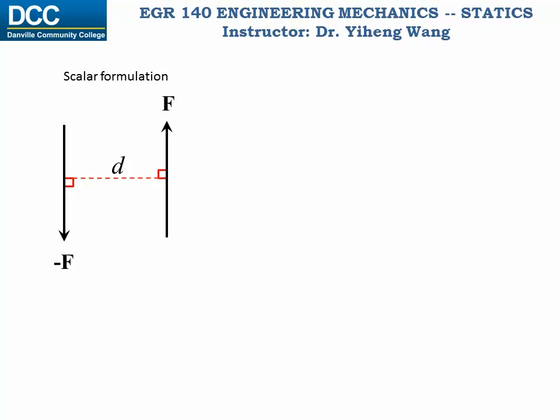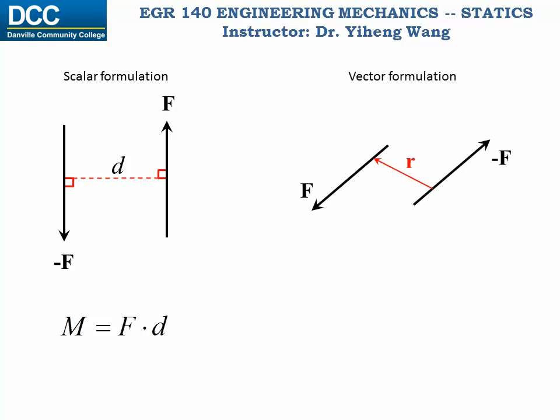In summary, to calculate the moment of a couple: in scalar formulation, the moment equals F times d, where F is the magnitude of one of the forces and d is the perpendicular distance between the two forces. You need to determine if the moment is positive or negative based on whether the rotational effect is counterclockwise or clockwise. In vector formulation, the moment equals R cross F, where F is one of the force vectors and R is the position vector that ends on that force vector. R can be any position vector between the two force vectors.